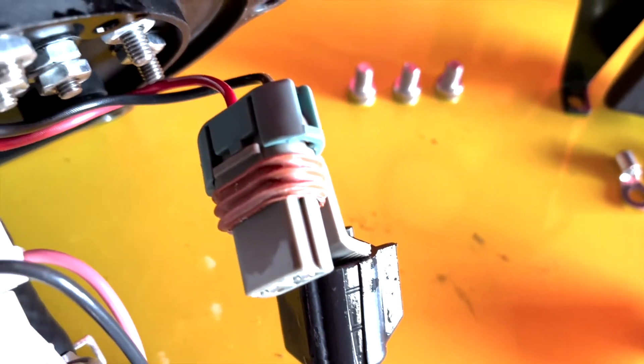Next, you are going to detach the connector from the fuel pump, and then remove the fuel pump from the hanger.